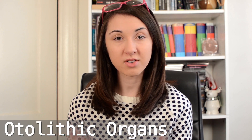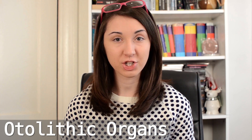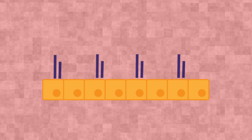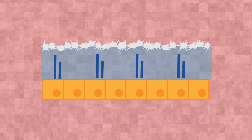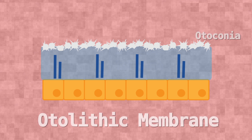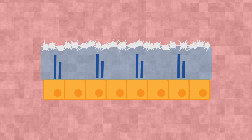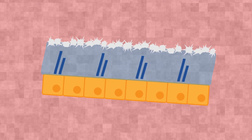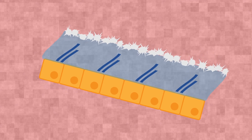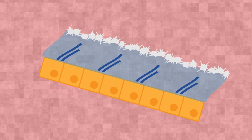The vestibular system also contains the otolithic organs — the saccule and the utricle — which help sense equilibrium and linear acceleration. These organs contain otolithic membranes: a cell layer with hair fibers embedded in a gelatinous layer, on top of which sit calcium carbonate crystals called otoconia. These crystals make the top of the gelatinous layer heavier than the bottom, so when you tilt your head, the crystals slide, distorting the gelatinous layer and the hair cells, telling your brain that a tilt has occurred.